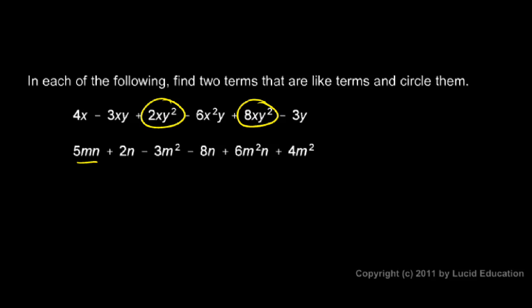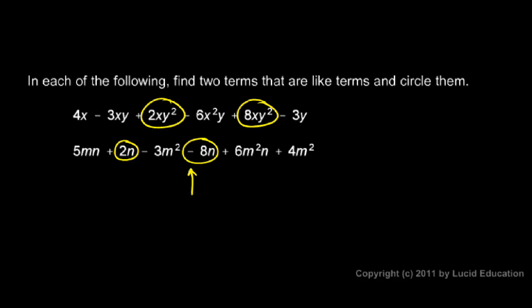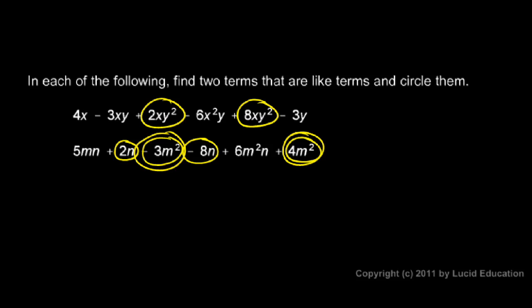Now let's look at this one. Here's an MN — none of those others have exactly an MN. Here's an N term, and here's another N term. So let's circle those: there's a 2N and this negative 8N. Circle that negative sign as part of your answer — the 2N and the negative 8N are the two like terms, and the negative sign is part of that term. But now look here — there's an M squared. Oh wait, here's an M squared over here. So the negative 3M squared and the 4M squared are also like terms, so we need to circle those. The N terms are like terms and the M squared terms are like terms.